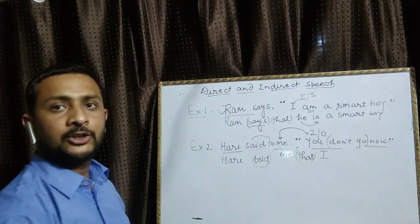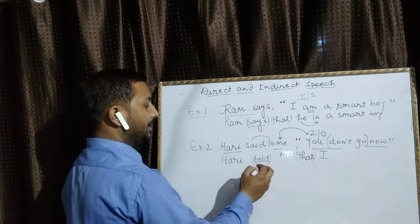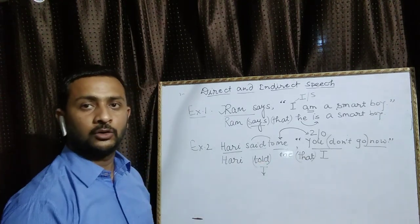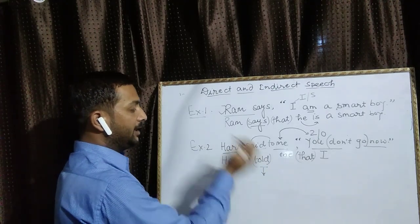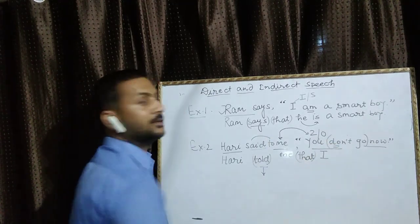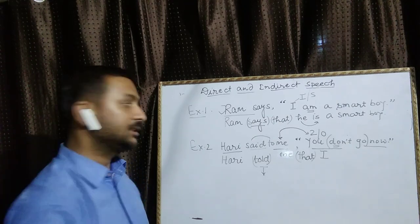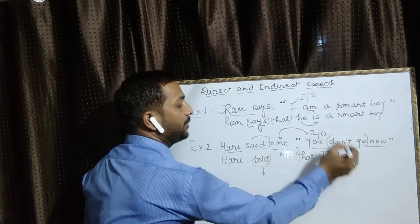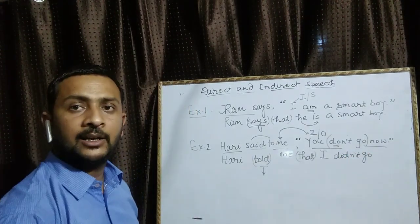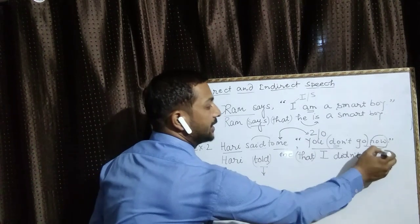Important part: 'do not go' — यह हमारी verb side है। इस side को हम केवल तब change करते हैं जब reporting verb past में हो। Past की पहचान: last में D होना — said, told, asked। Reporting verb past में है, तो tense change करते हैं। 'Do not go' present indefinite है — present को past का नाम लगा देते हैं: 'did not go'। Now को change करेंगे: 'then'। यह complete sentence है।